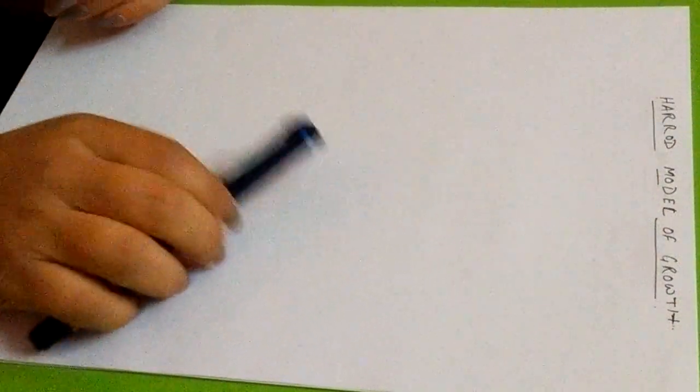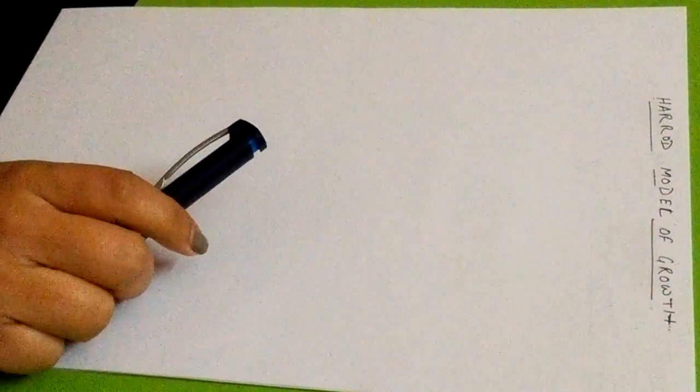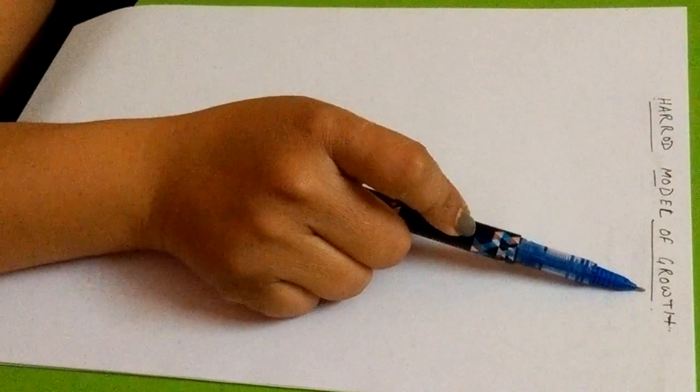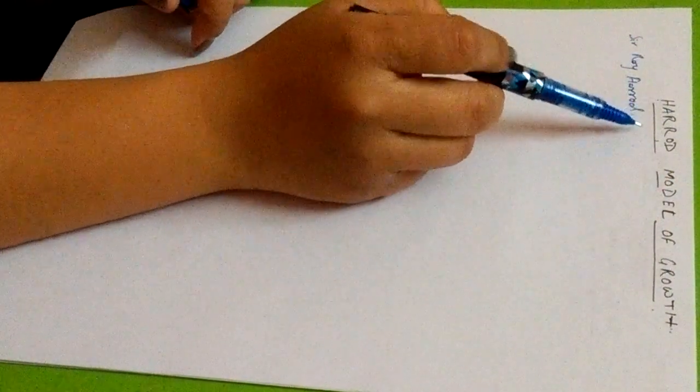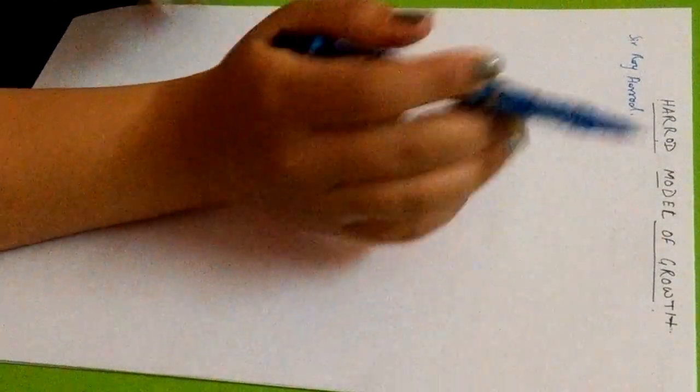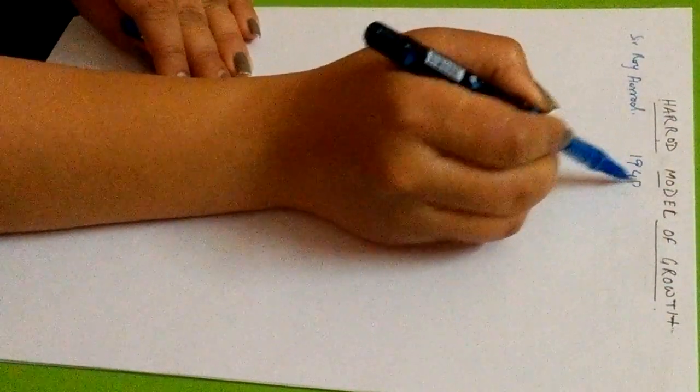Hello, today we are going to discuss a very interesting topic of developmental economics — the Harrod-Domar model of growth. In this part, we are going to focus on the Harrod model of growth. The Harrod model was given by Sir Roy Harrod, and from there this model got its name as the Harrod model of economic growth. This was proposed by Sir Harrod in 1948.